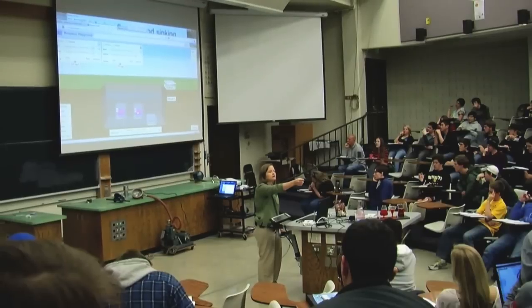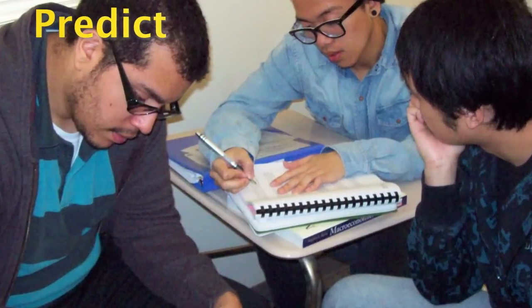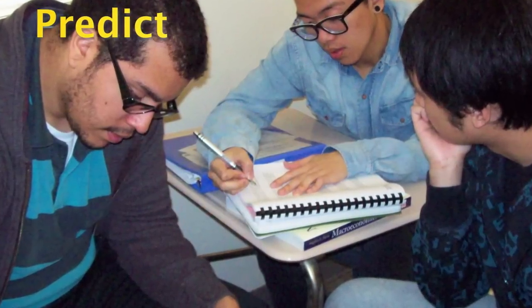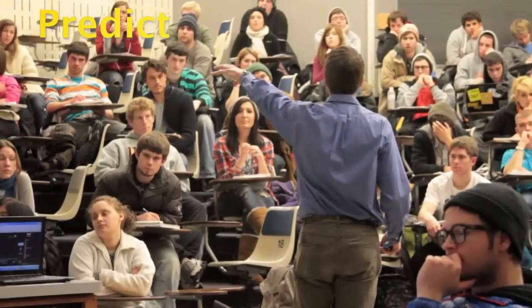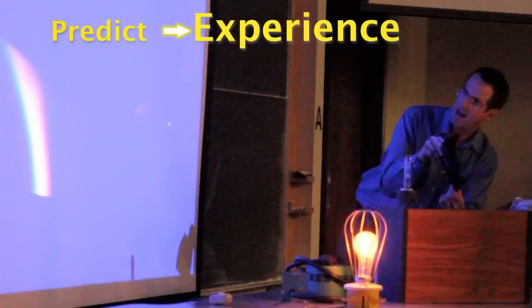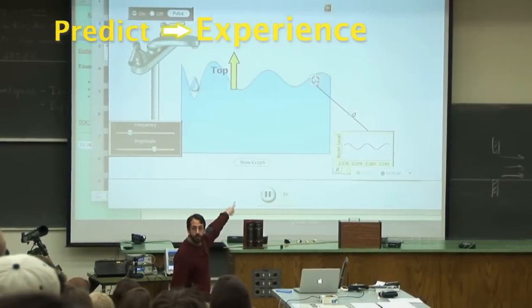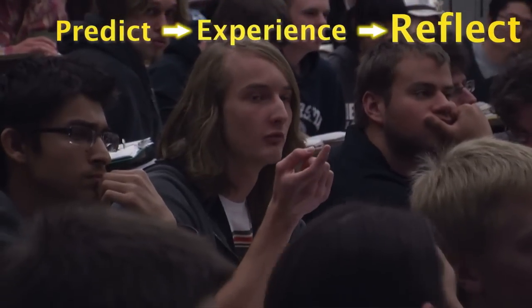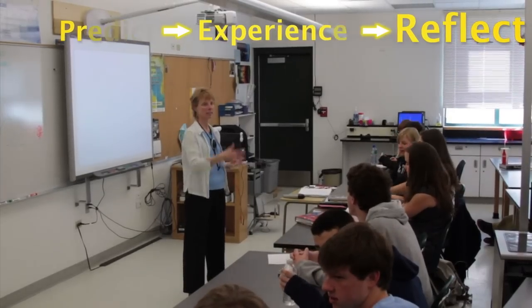Here the instructor poses a scenario and asks students to predict what's going to happen. They write down individually and then they discuss together and form a group opinion. The instructor can then elicit those responses from the student and pull out their reasoning before they essentially conduct the experiment. And in this case they conduct the experiment using the simulation. The students can then reflect on what actually happened and the instructor can have a whole class discussion around the science and the reasoning and ideas that are going on.